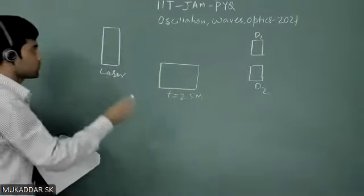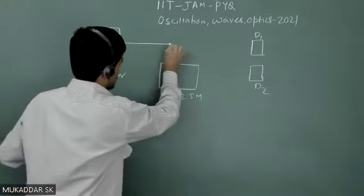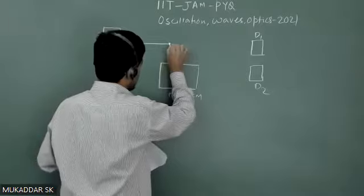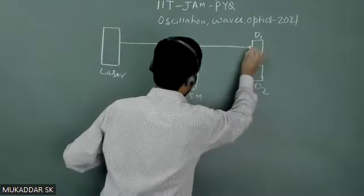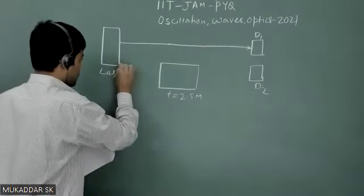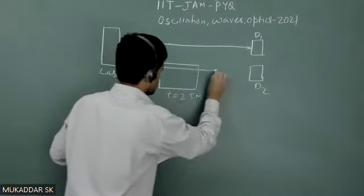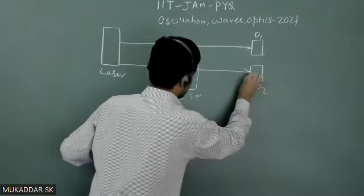From laser source, one part of light is traveling through air and striking that detector D1, and the other part of ray passes through this transparent medium and strikes detector D2.